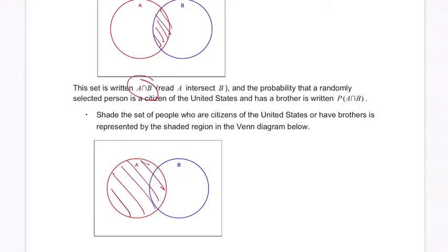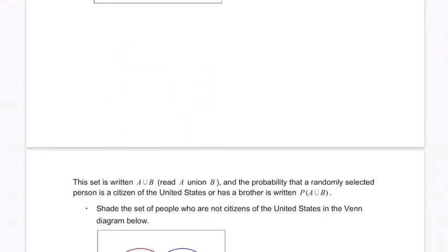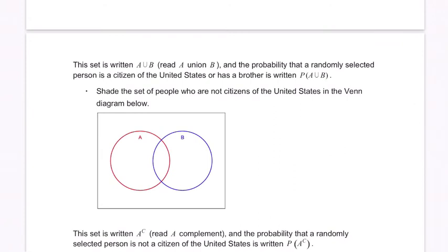Here they show what the notation is: A or B, read A union B. And it's the probability that a randomly selected person is a citizen of the United States or has a brother.